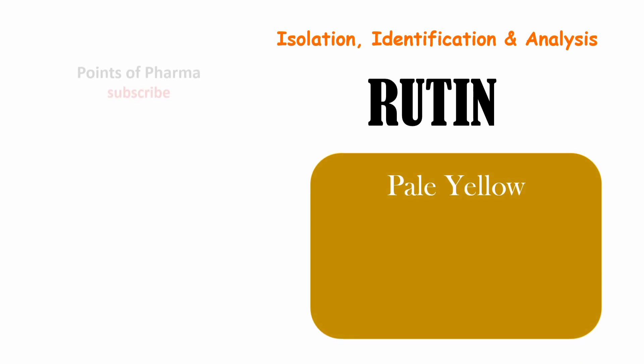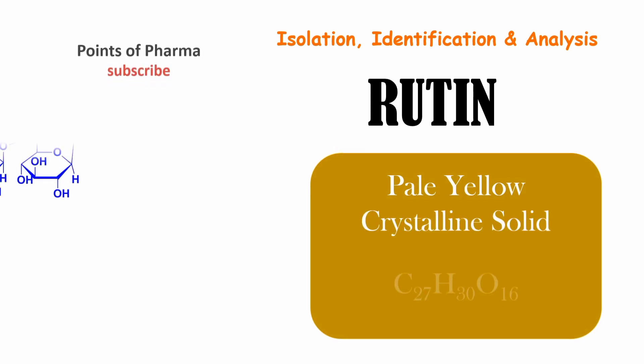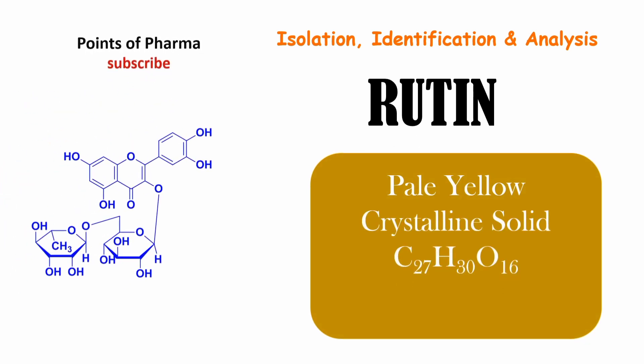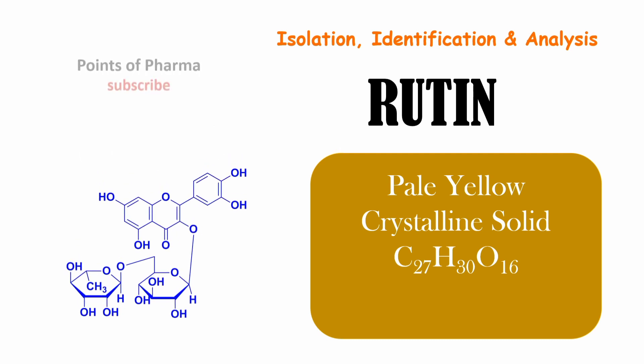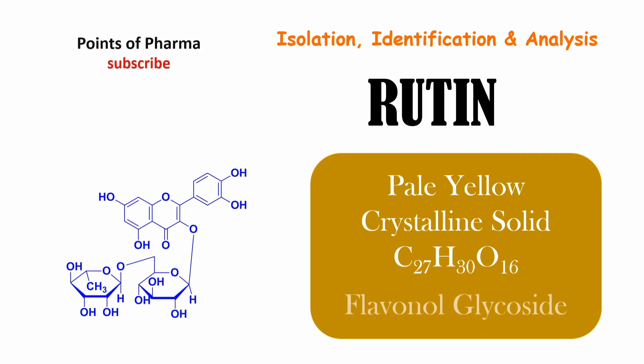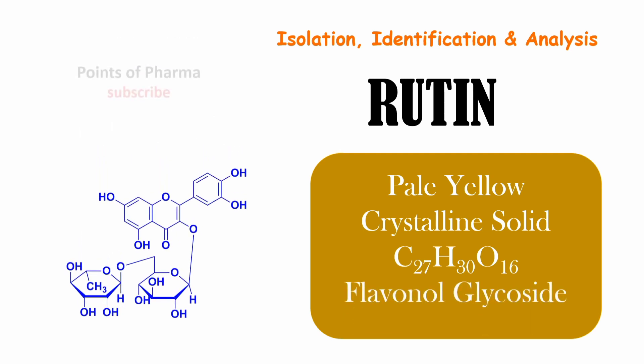Rutin is a pale yellow crystalline solid. Its molecular formula is C27H30O16. Rutin is a flavonol glycoside. Here we will begin with the plant material and isolation process of Rutin.